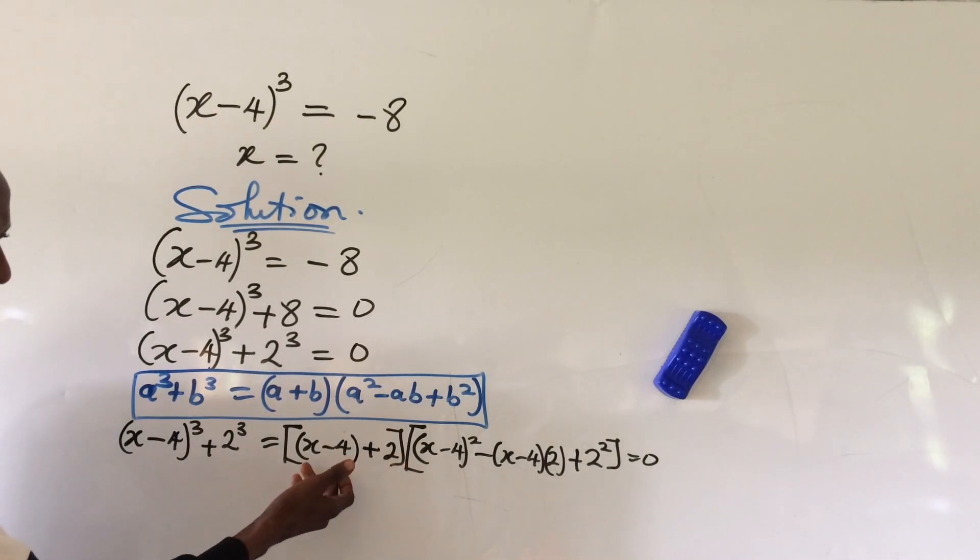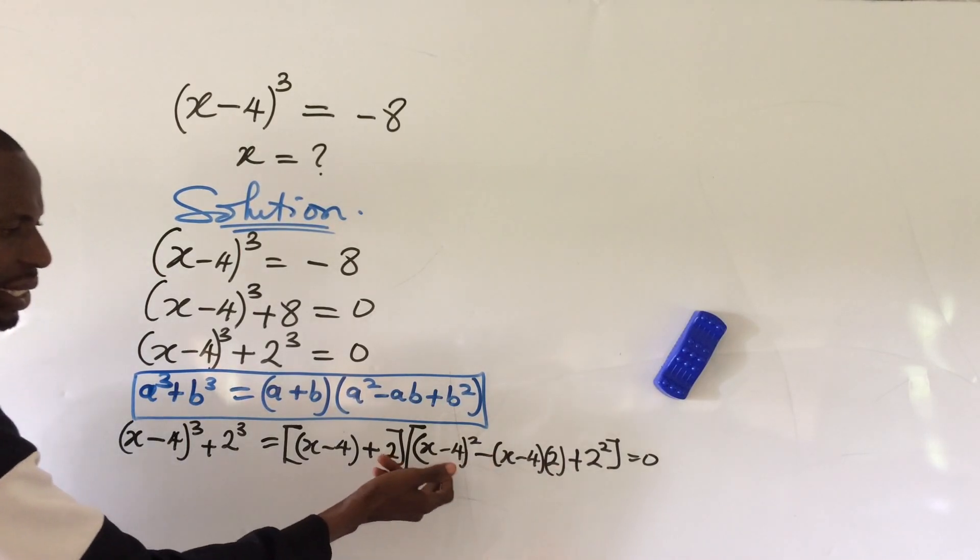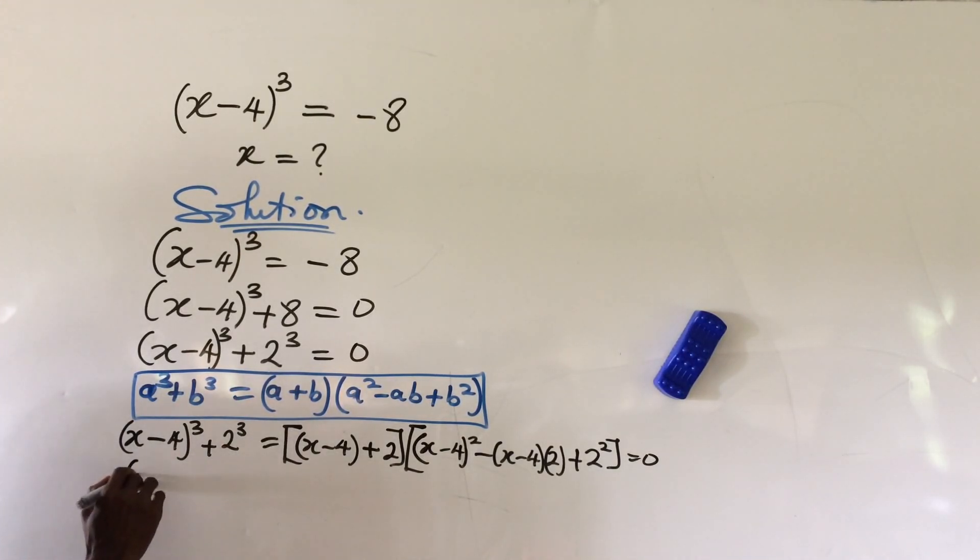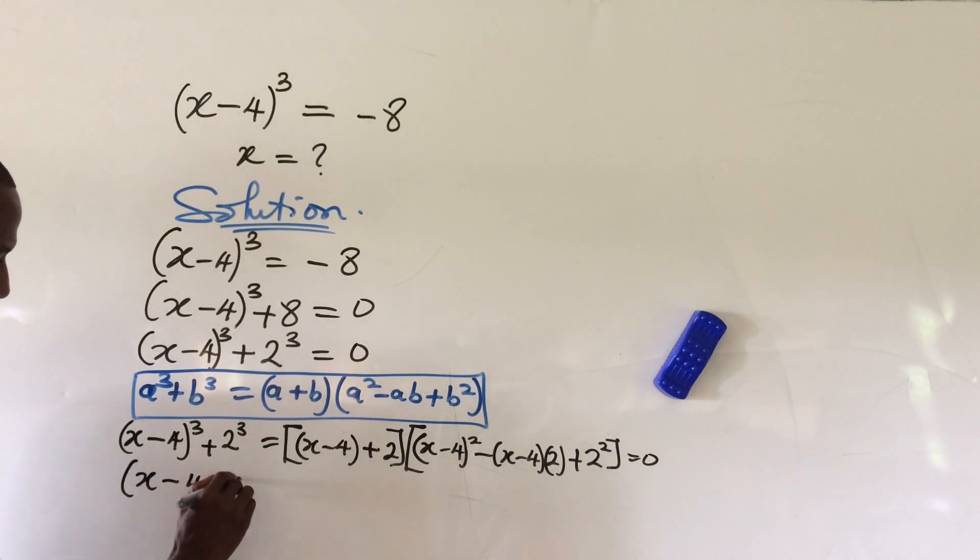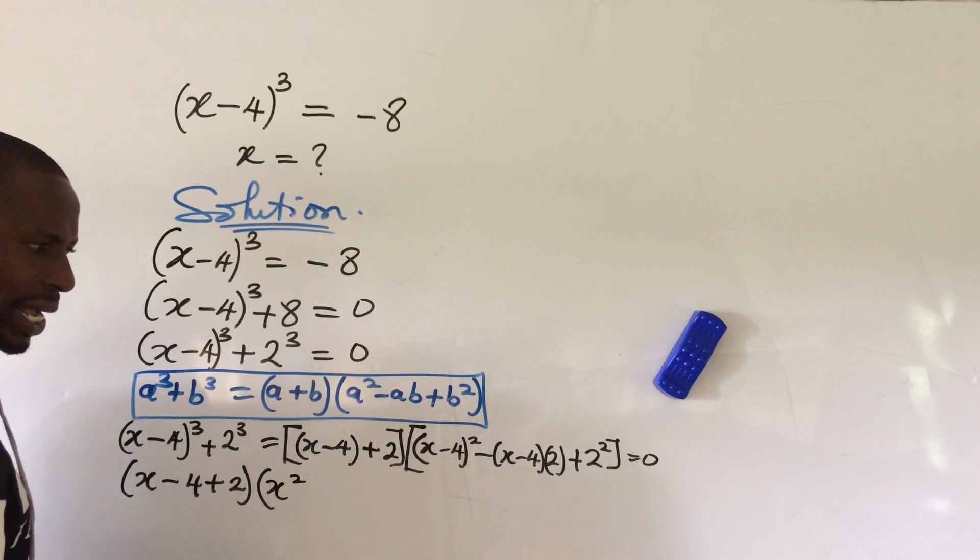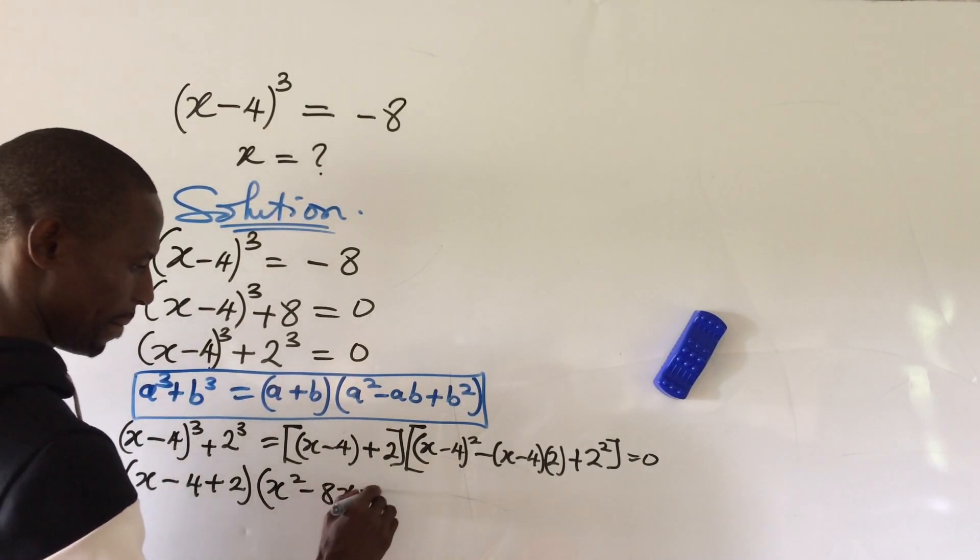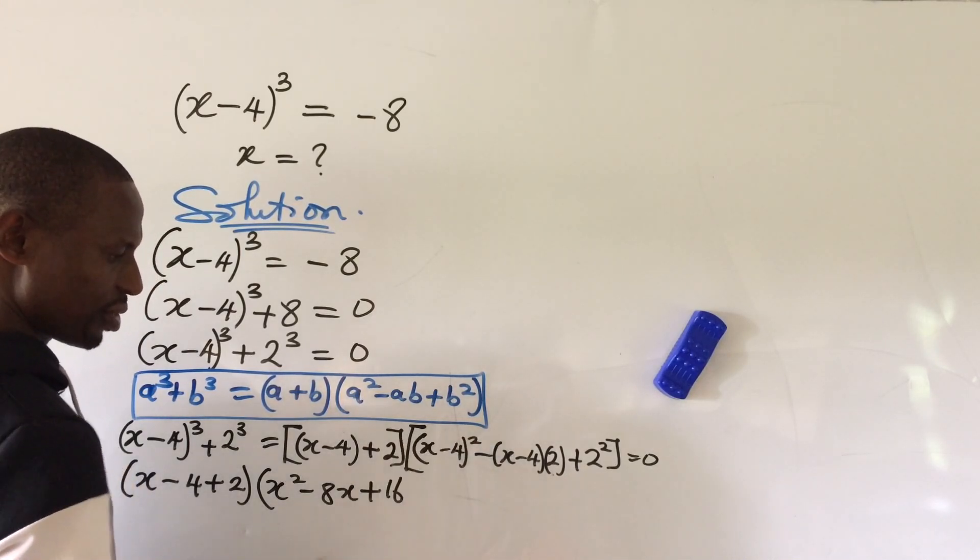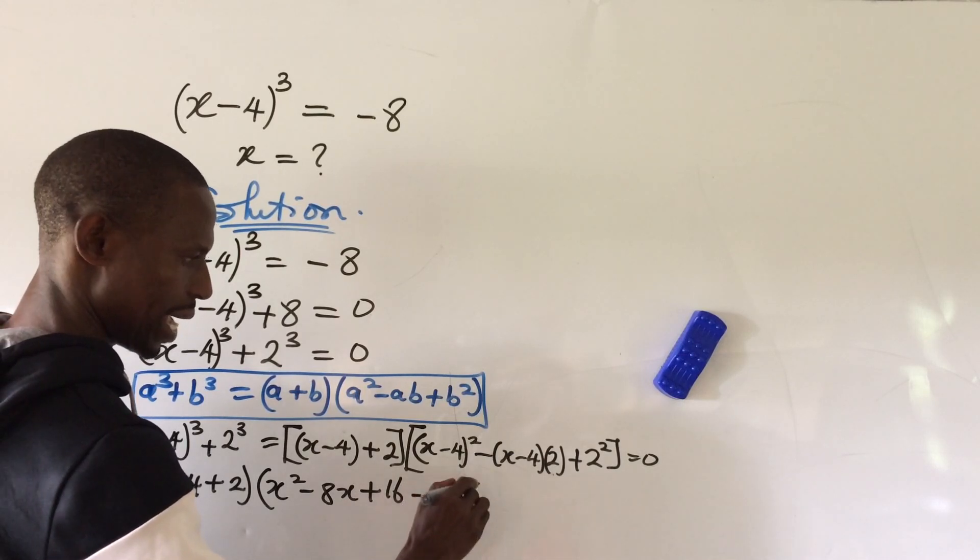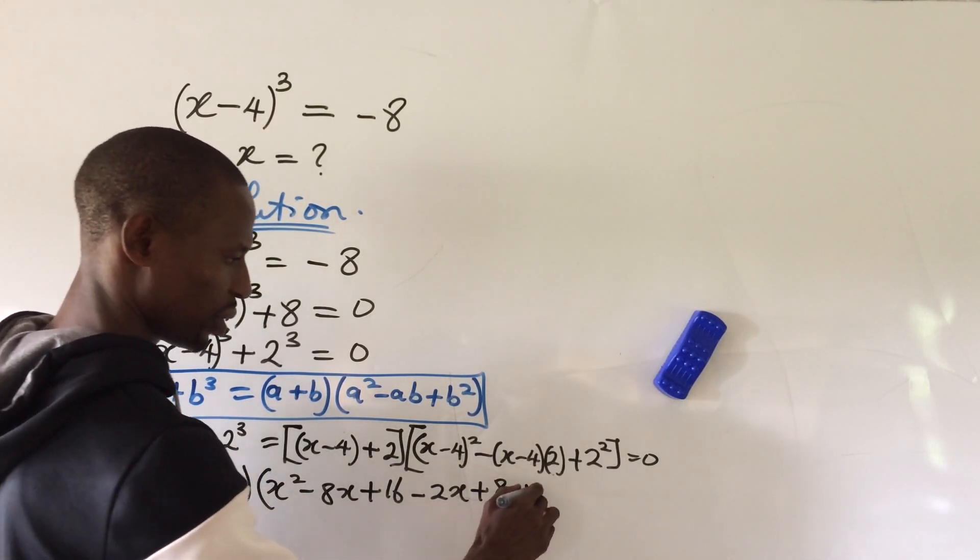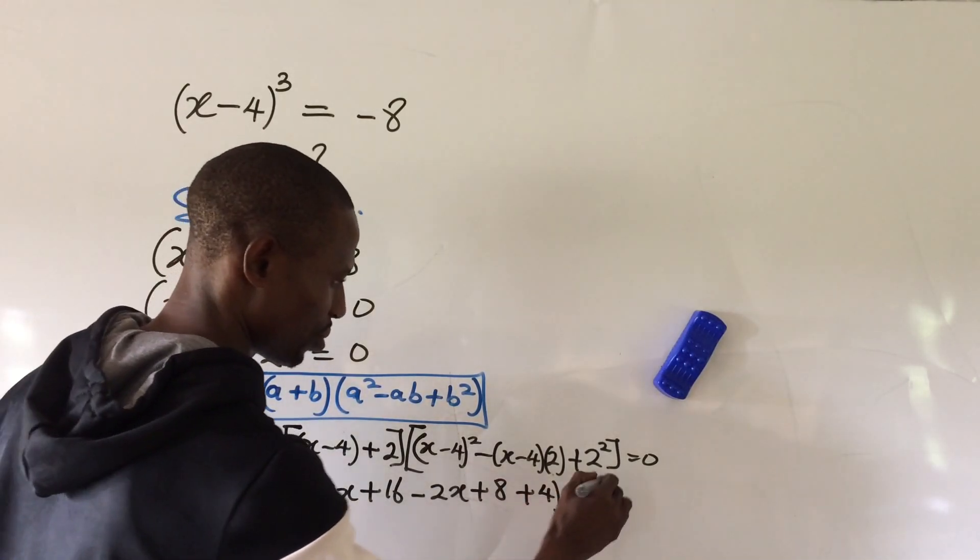So at this point, we can open up this bracket and also open up everything we have in here by simplifying (x-4)². So if we do that, we're going to have (x-4+2) times [x² - 8x + 16 - 2x + 8 + 4]. Everything equal to 0.